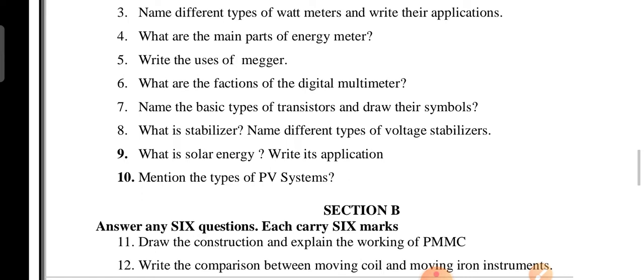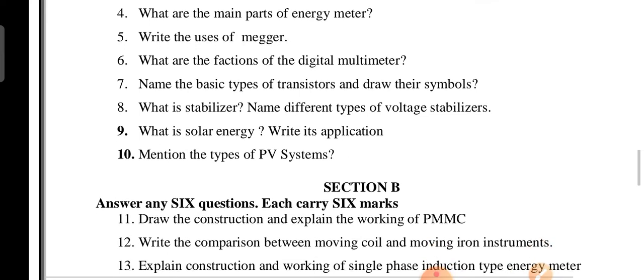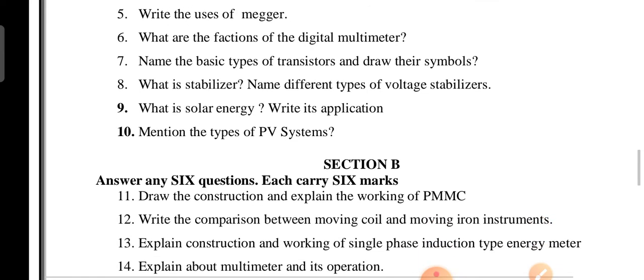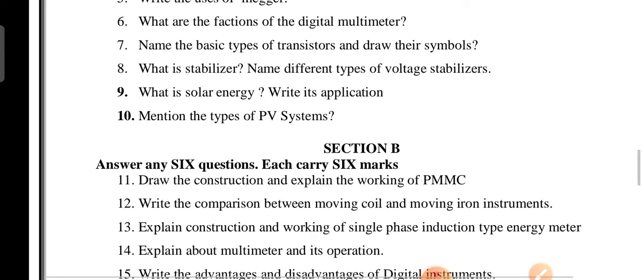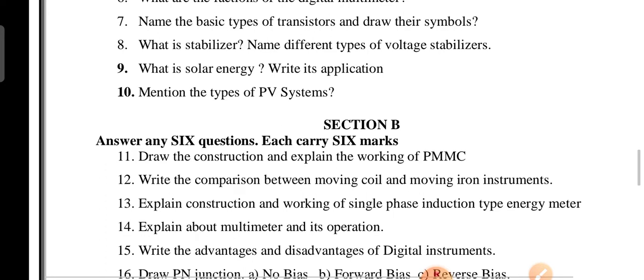Further Section A questions include: what are the functions of the digital multimeter, name the basic types of transistor and draw their symbols, different types of voltage stabilizer, solar energy wire, and applications and types of PV system.